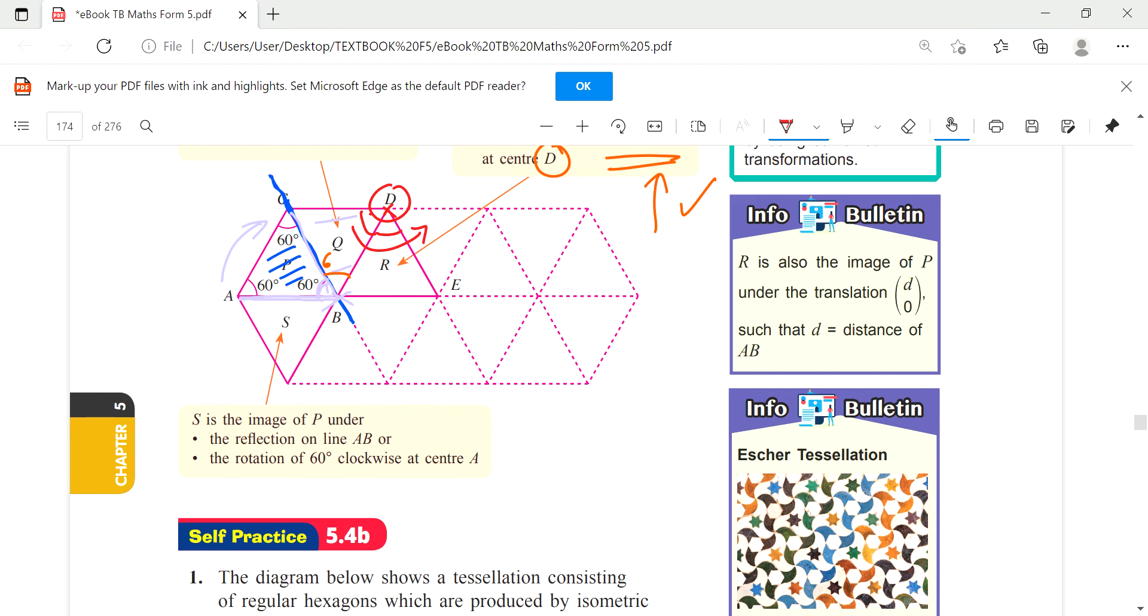And S is the image of P. The reflection line is here AB, and then rotation is - if center A, that means it is clockwise 60 degrees.